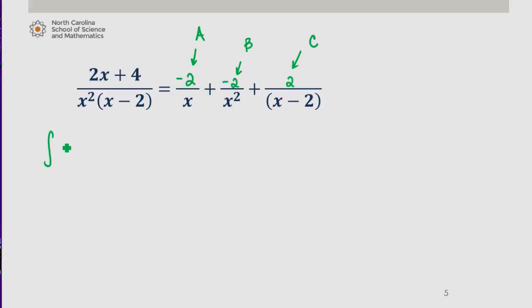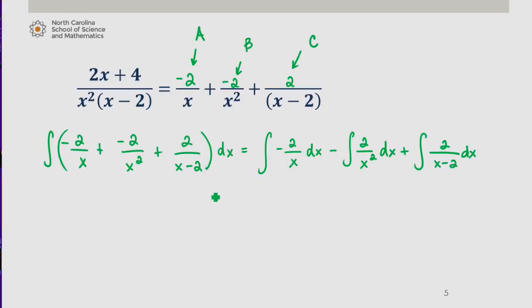Integrating this, we get the integral of negative 2 over x plus negative 2 over x squared plus 2 over x minus 2 dx. We're going to split this integral up.